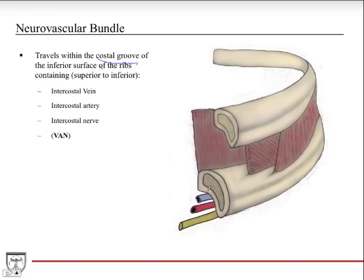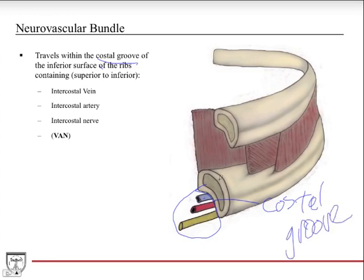Here's a diagram showing the costal groove where the neurovascular bundle travels. You have your rib, and the neurovascular bundle — vein, artery, nerve — sits in the costal groove, which serves as protection for these important structures. From superior to inferior, the order is vein, artery, nerve, and a mnemonic for that is VAN: vein, artery, and nerve.